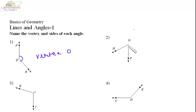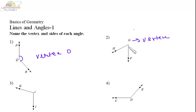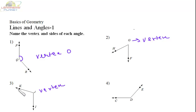Similarly, GH and GF — two rays — are meeting at the point G. So G is the vertex and GF and GH are the rays, which are the sides of this particular angle. Here JK and JI two rays are meeting at the point J, so J is the vertex and JI and JK are the sides.